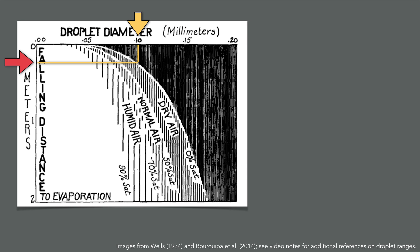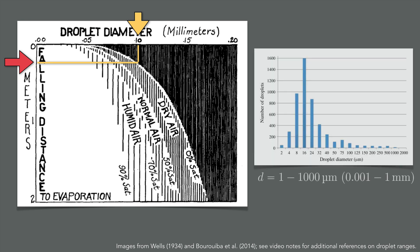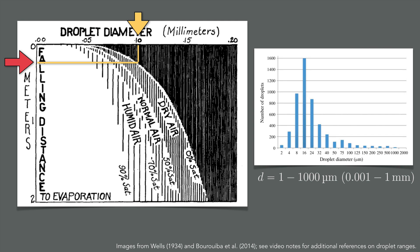The natural question you have at this point is, what types of droplet sizes occur in a cough or a sneeze? Here is a graphic from a 2014 paper we are about to discuss, which shows the typical droplet diameters for coughs obtained from experiments. The diameters are well within the ranges for which we should be worried about the droplets remaining in the air for significant periods.